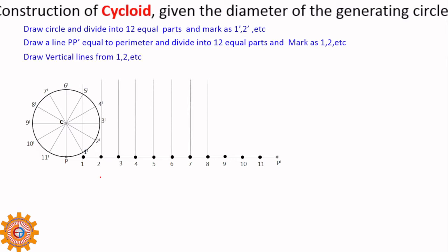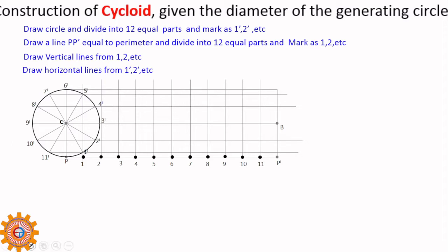Don't forget that PP' dash is the perimeter. Our starting point 0 point is P. Draw vertical lines from 1 dash, 2 dash, 3 dash, 4 dash and so on. Draw horizontal lines from 1 dash, 2 dash, 3 dash, 4 dash. Intersecting of vertical lines and the center lines gives us C1, C2, C3, C4.